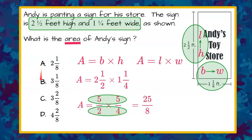All of our answer choices are written as mixed numbers. 8 goes into 25 three times completely, which is 24. 3 times 8 is 24, we have one left over. So our answer for the area of Andy's sign is 3 and 1⁄8. Our answer is B.